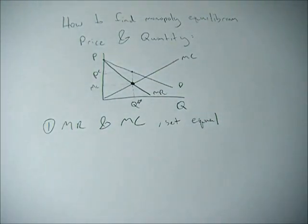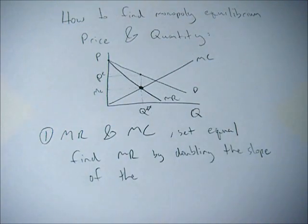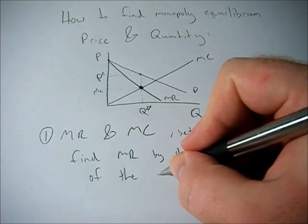However, if you're given a demand function and not a marginal revenue function, then you can find the marginal revenue function by doubling the slope of the demand function.